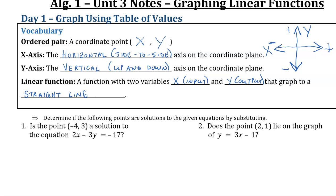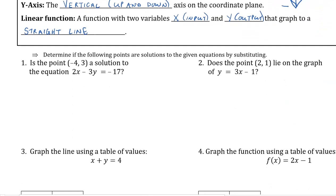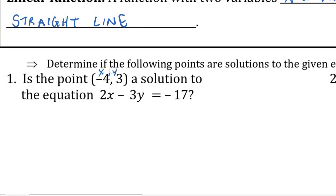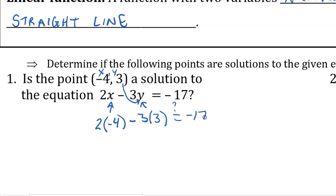What does it mean to solve for a specific coordinate pair to see if it is a solution to an equation? A coordinate pair is x comma y, so the first number is our x value. We'll plug in negative 4 for x and then similarly plug in our value for y. We get 2 times negative 4, which is negative 8, minus 3 times 3, which is 9. Is negative 8 minus 9 equal to negative 17? Yes — so it is a solution.